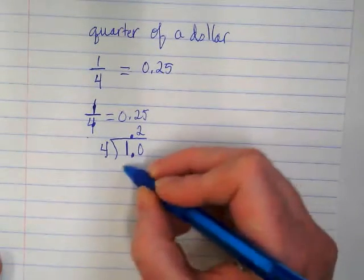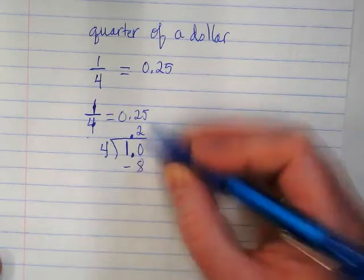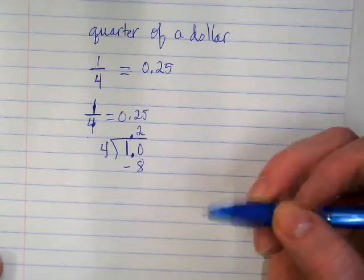Two times four is eight. Notice I just put the decimal up. Just go straight up when I'm dividing. Ten divided by eight is two.